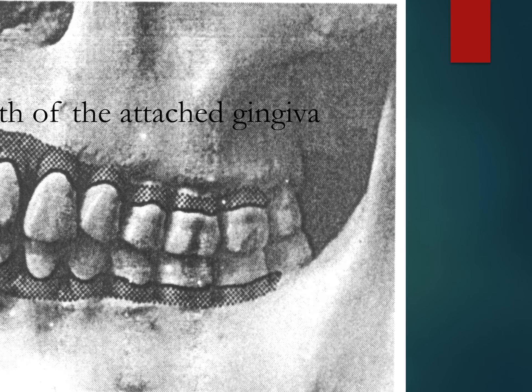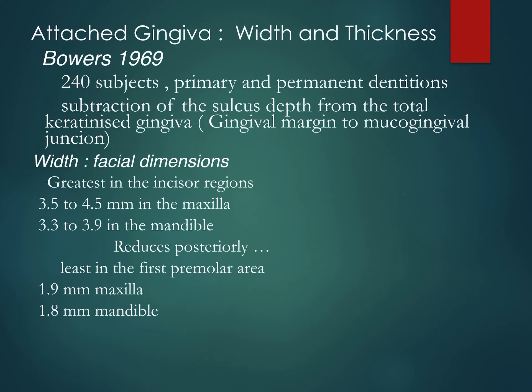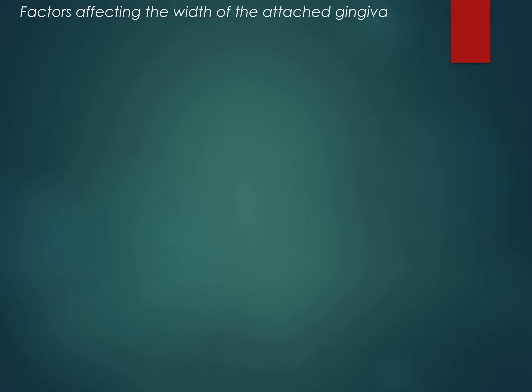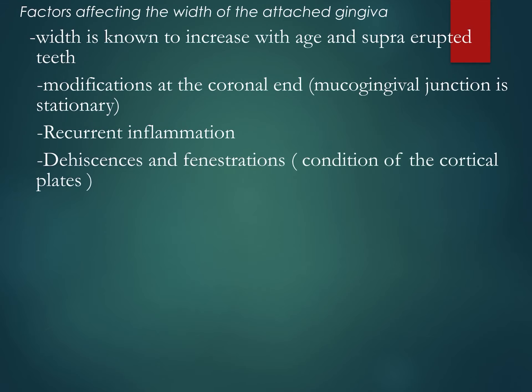The radiographic method was given by Terraria and Animo. You place a thin ortho wire over the sulcus and take a radiograph to examine the mucogingival junction — this is not a commonly done method. The width of attached gingiva, as given by Bowers, is greatest in the maxillary incisor and mandibular incisor areas and least in the premolar areas. The width is known to increase with age and with supra-erupted teeth. Modifications at the coronal and mucogingival junction are noted, and recurrent inflammations are seen.